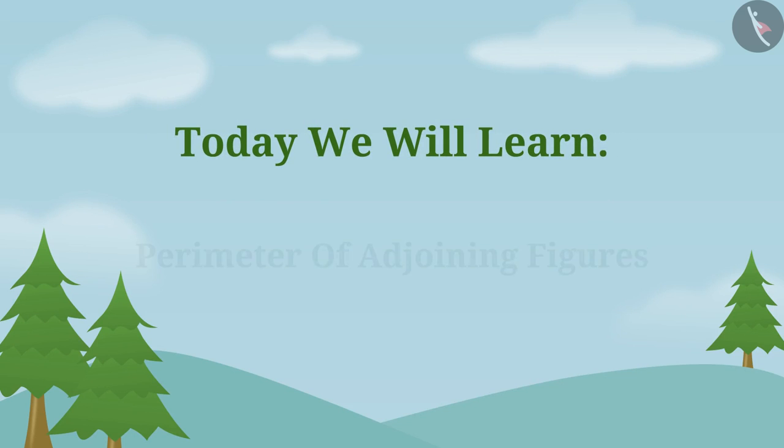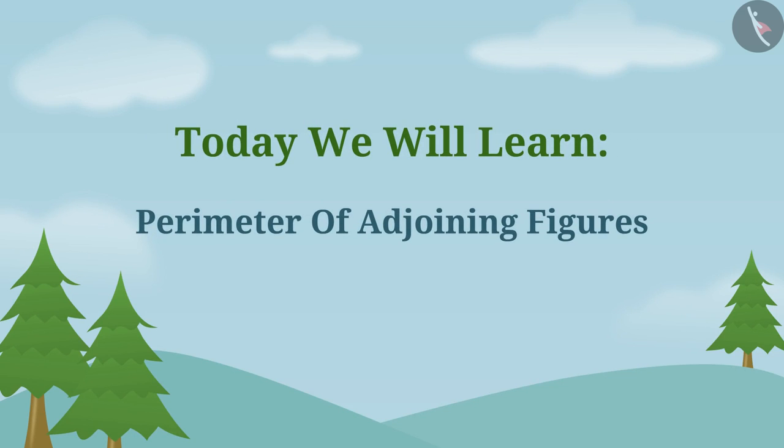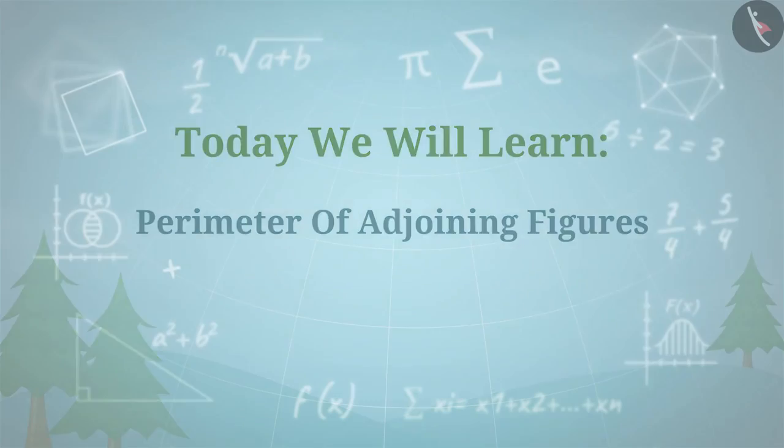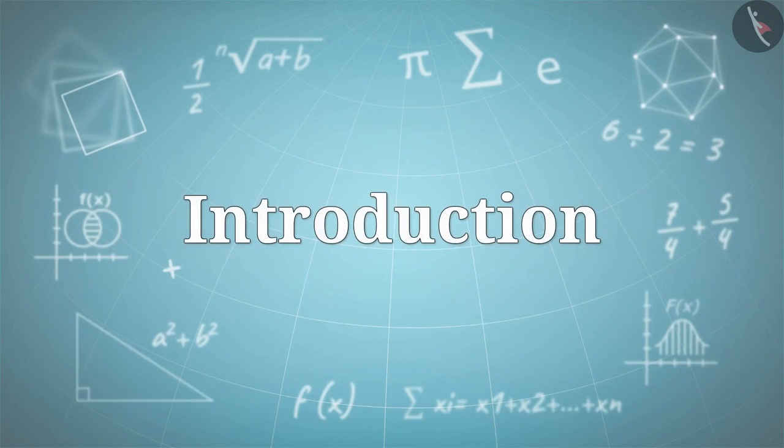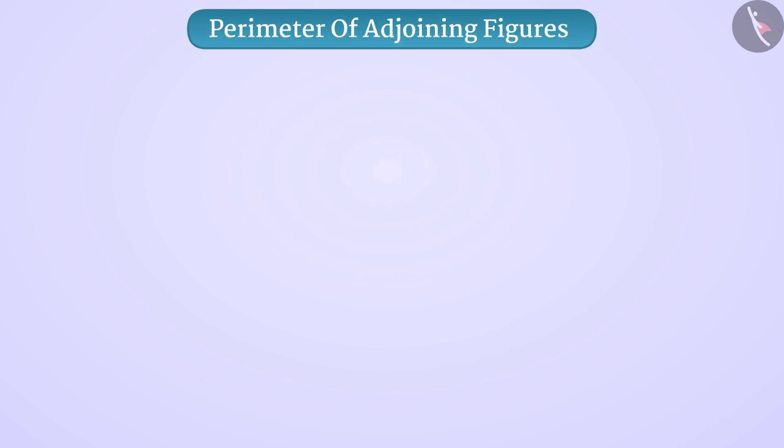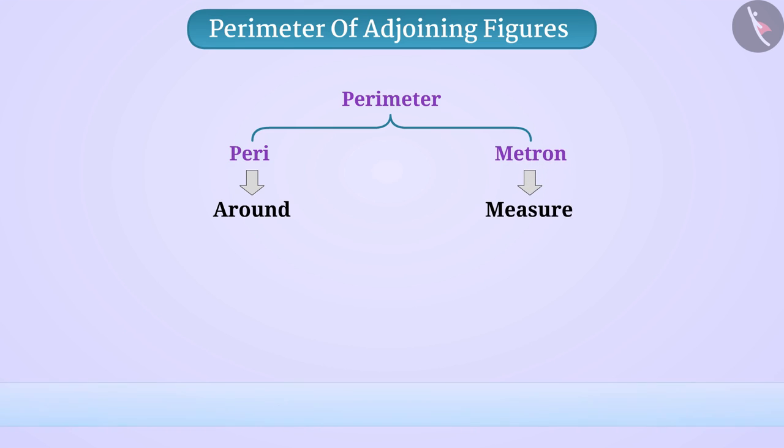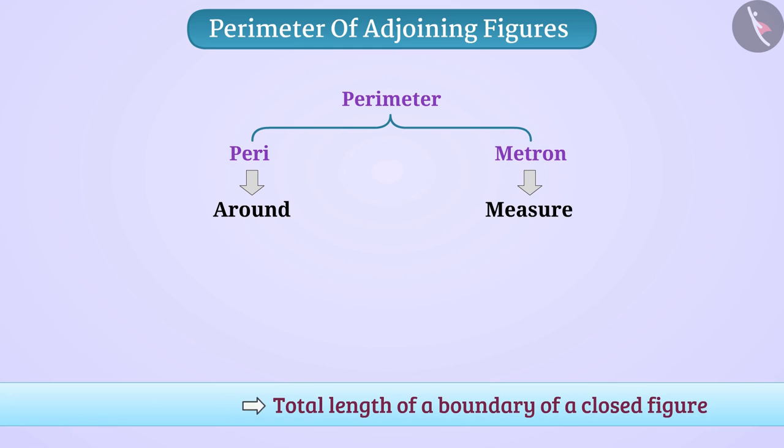Today we will learn perimeter of adjoining figures. Perimeter is derived from the words peri and metron. Peri means around and metron means measure. In this way, the total length of a boundary of a closed figure is called its perimeter.